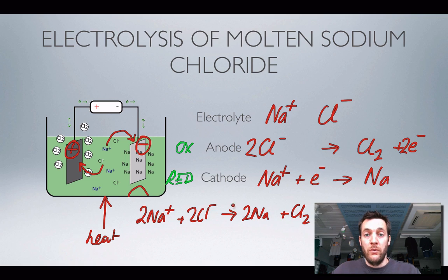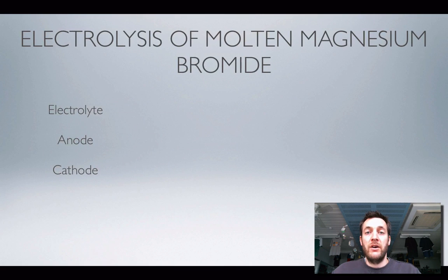Let's have a look at another example, this time without a diagram to show what's going on, so we can just think about the principles involved. I've got molten magnesium bromide, so I've got what ions in my electrolyte? I've got Mg²⁺ ions and I've got bromide ions. So they're my two ions that are present in the electrolyte. Oxidation is taking place at the anode, reduction is taking place at the cathode. Which of these two ions will be oxidized?